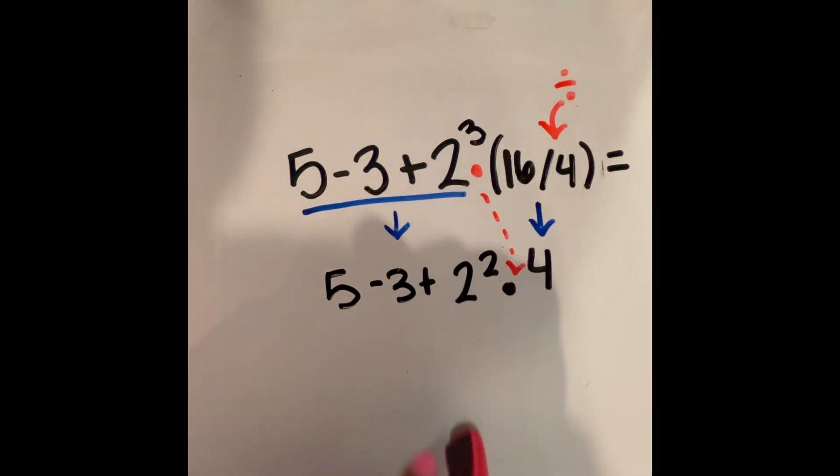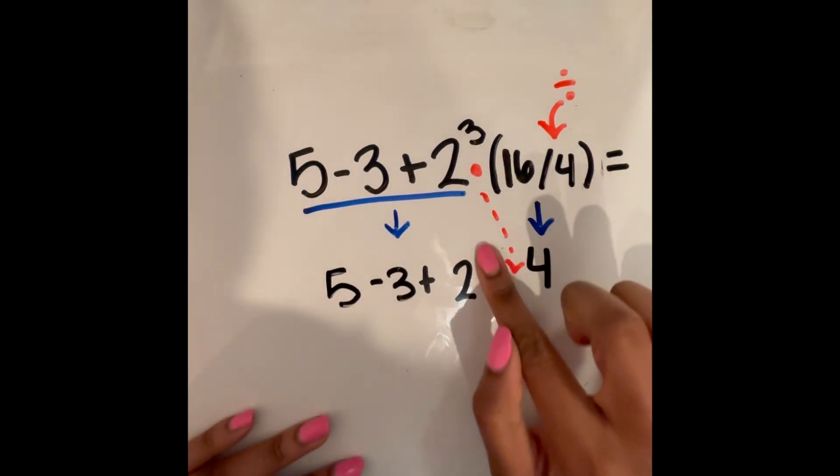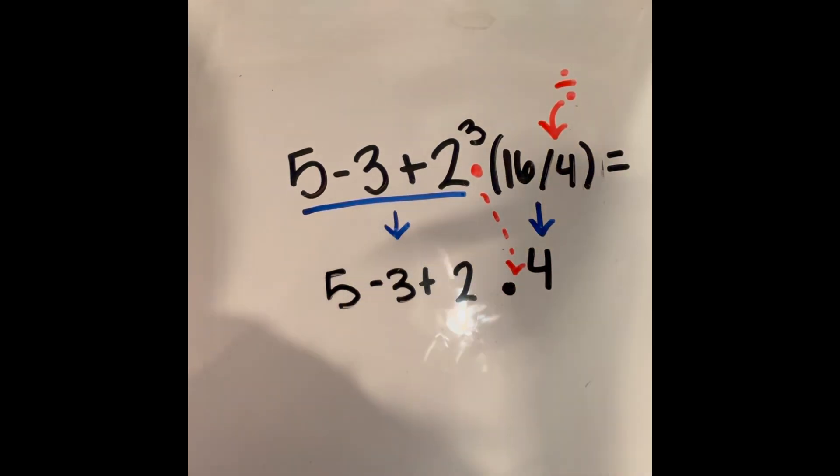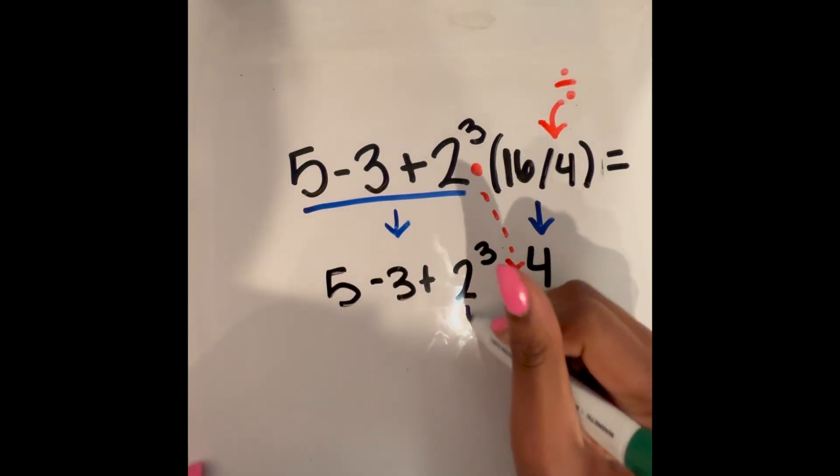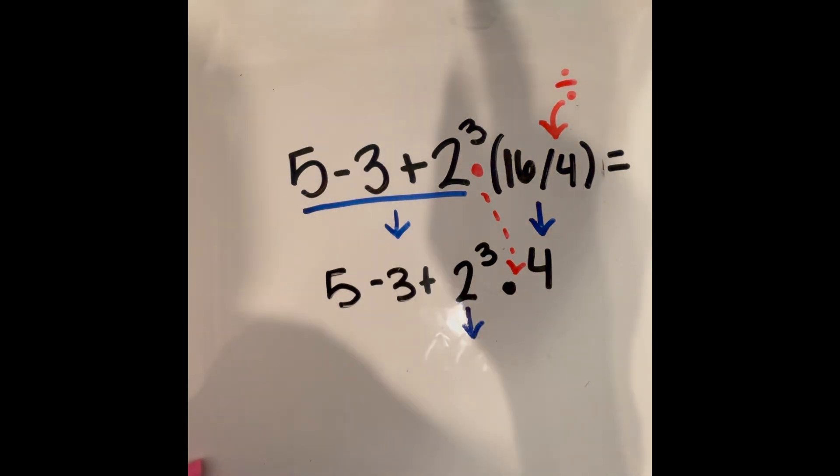So now PEMDAS. We did P, now we're looking at E exponents. So we're moving on to exponents. Right here we have 2 cubed. So we're going to solve that. 2 cubed is 8. 2 times 2 is 4, and 4 times 2 is 8. So 2 cubed is 8.